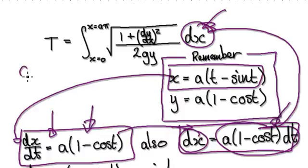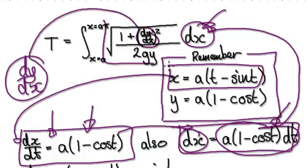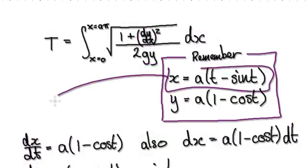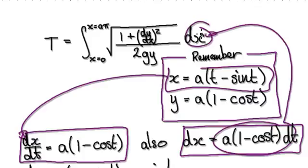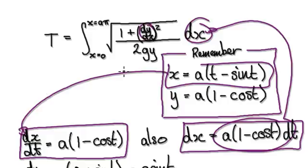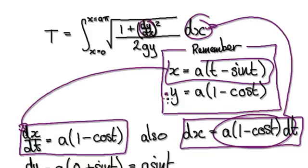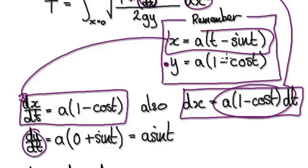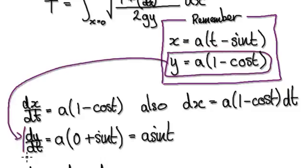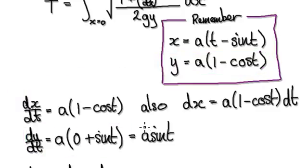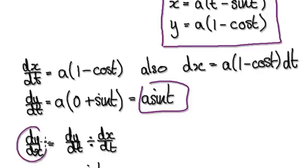We need dx by dt in order to work out dy by dx, because we need dy by dx to evaluate the integral. From the parametric equations, differentiating x gives dx by dt. Then in order to work out dy by dx, we also need dy by dt. So differentiating y with respect to t gives dy by dt, which happens to be this.